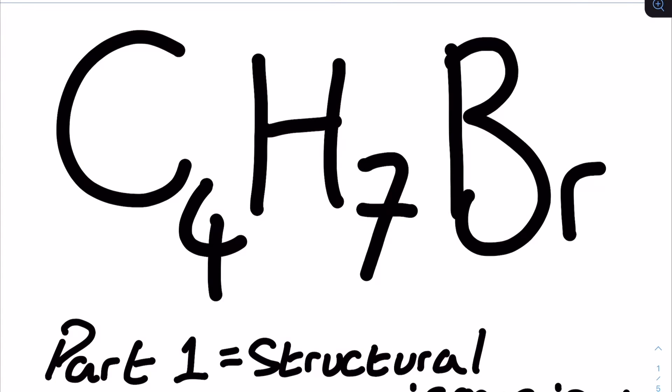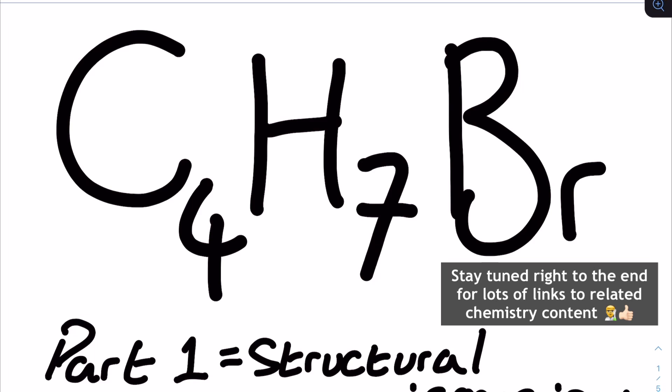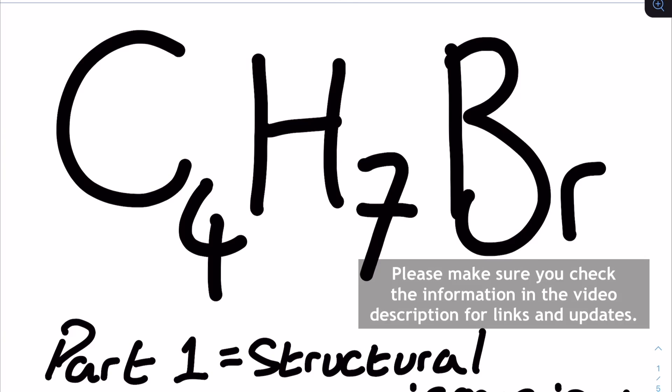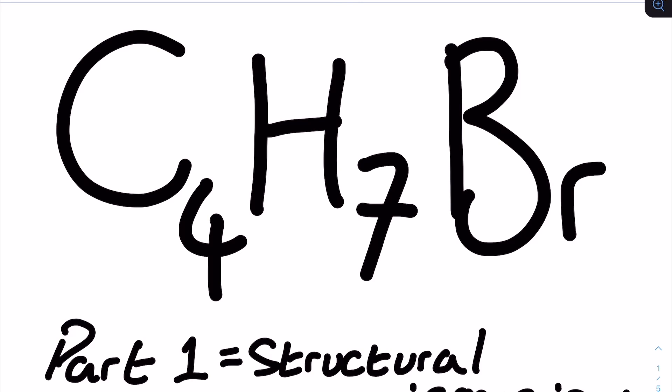In organic chemistry we have two major categories of isomerism: structural isomerism and stereo isomerism. The formula C4H7Br can be drawn with structures that represent every single type of structural and stereo isomerism on the entire OCR A-level chemistry specification. In this tutorial I'll show you exactly how it can have 12 different structural isomers, how three of these have EZ and cis-trans stereo isomerism, and how two of the original structural isomers can also have optical isomers.